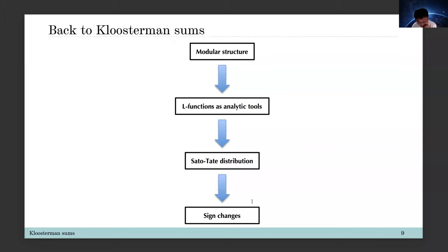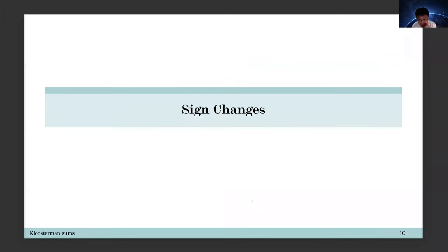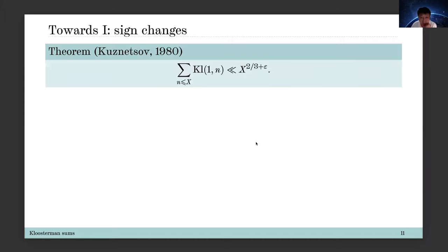In the case of elliptic curves we have analytic tools to study the distribution of Kloosterman sums. We want to explore the modular structure of Kloosterman sums, and then maybe we can construct certain L-functions as analytic tools to study the Sato-Tate distribution of Kloosterman sums with prime moduli, and then conclude sign changes of Kloosterman sums with prime moduli. We now discuss the three problems of Katz one by one: sign changes, equidistribution, and modular structures.